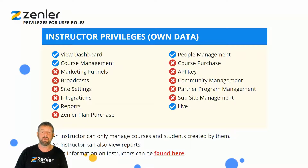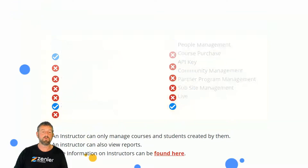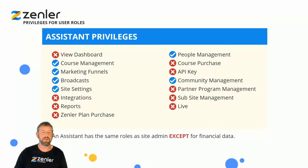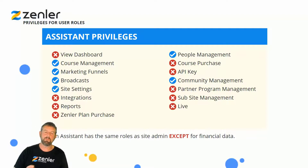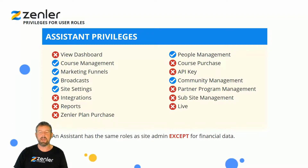I'm supplying this template for you so you can have it on hand to know exactly what the privileges for user roles are. Moving to assistant privileges — the assistant has course management rights, marketing funnels, broadcast, site settings, people management, and community management. They don't have access to the dashboard, integrations, reports or financials, Zendler plan purchase, course purchase, API keys, partner program management, sub-site settings, and live. An assistant has the same role as a site admin except they cannot view financial data.